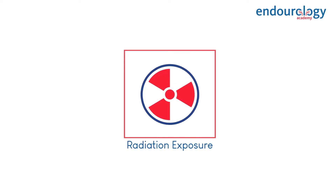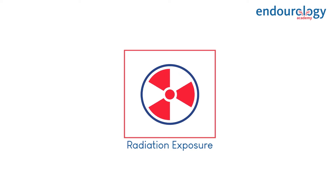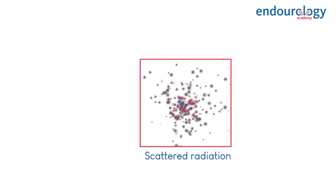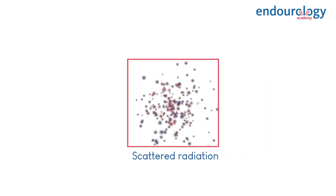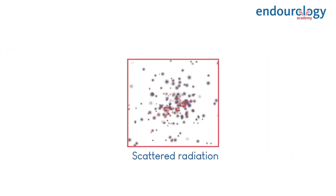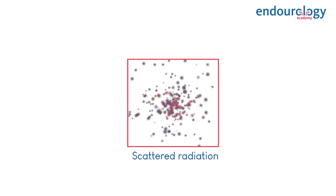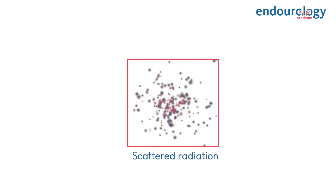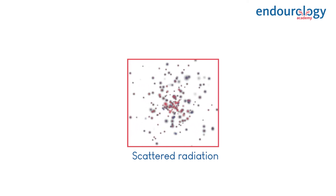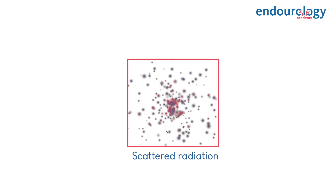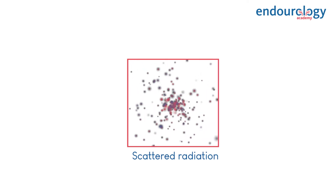These infographics will explain how radiation can adversely affect your body. Once the X-ray is released from the X-ray tube, some scattered radiation is reflected from the objects in the X-ray path before it hits the detector. The objects can be a patient table, patient, instruments, etc.